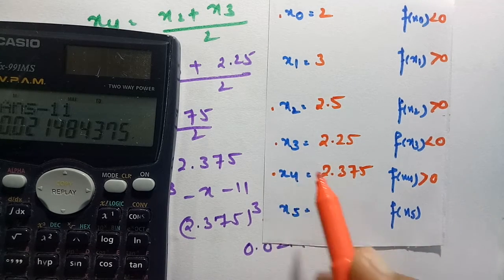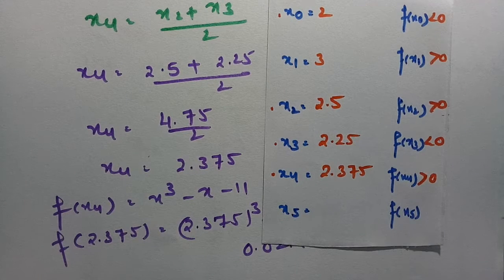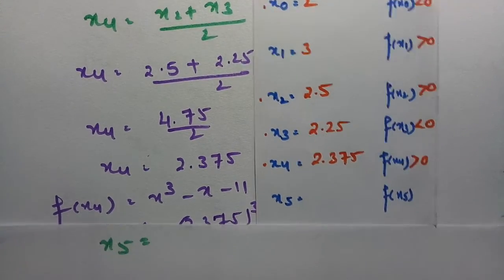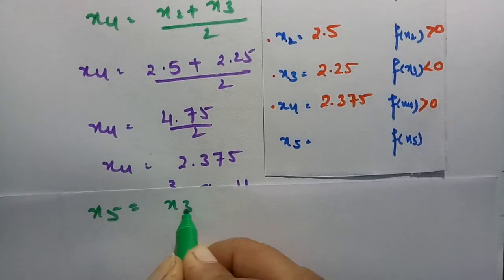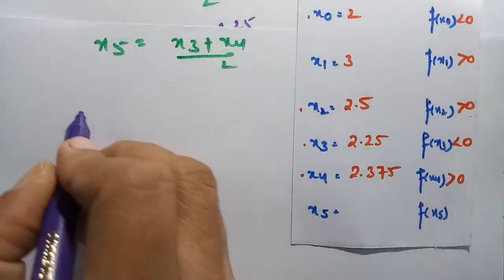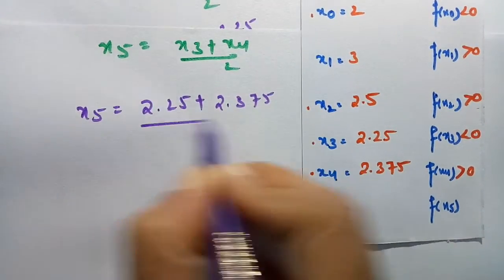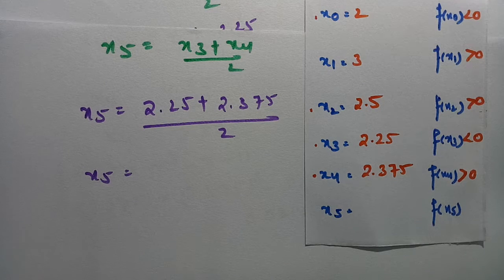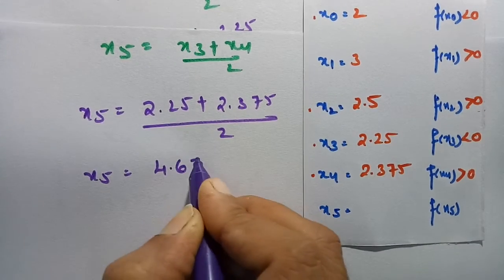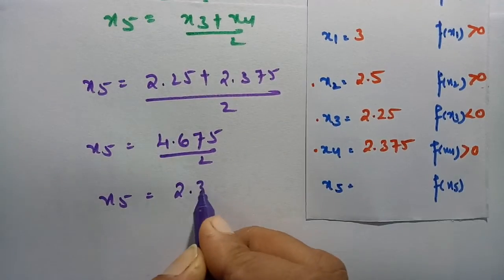We use x₃ and x₄ for the next bisection to get x₅. x₅ = (x₃ + x₄) / 2 = (2.25 + 2.375) / 2 = 4.625 / 2 = 2.3125.